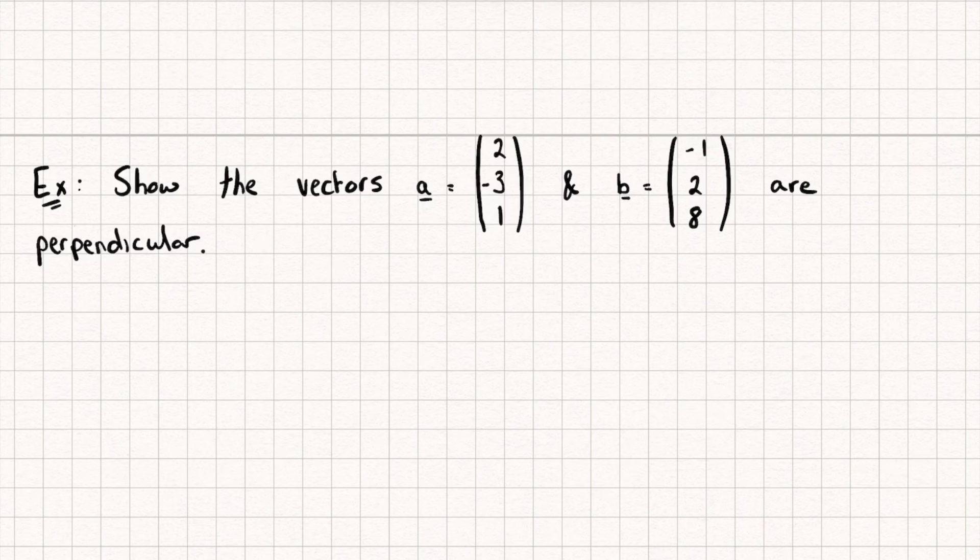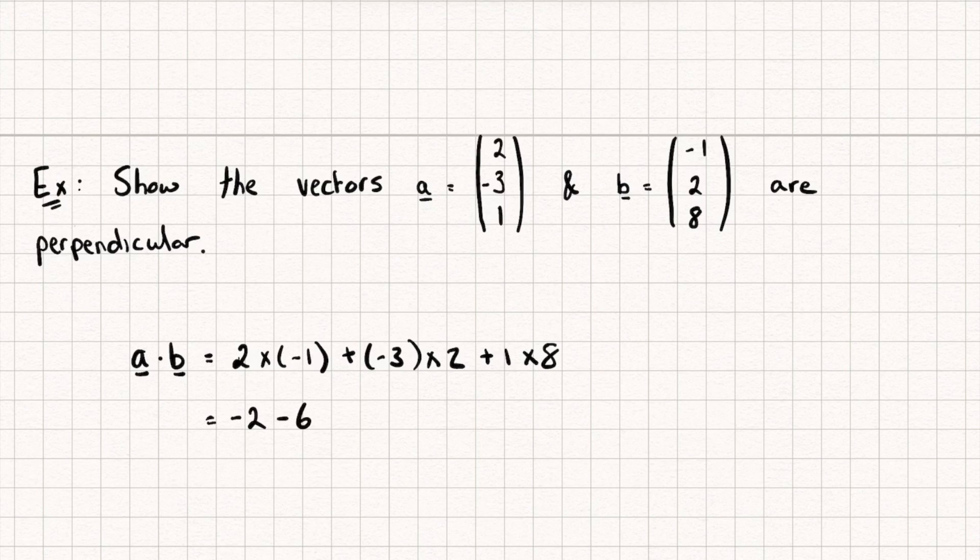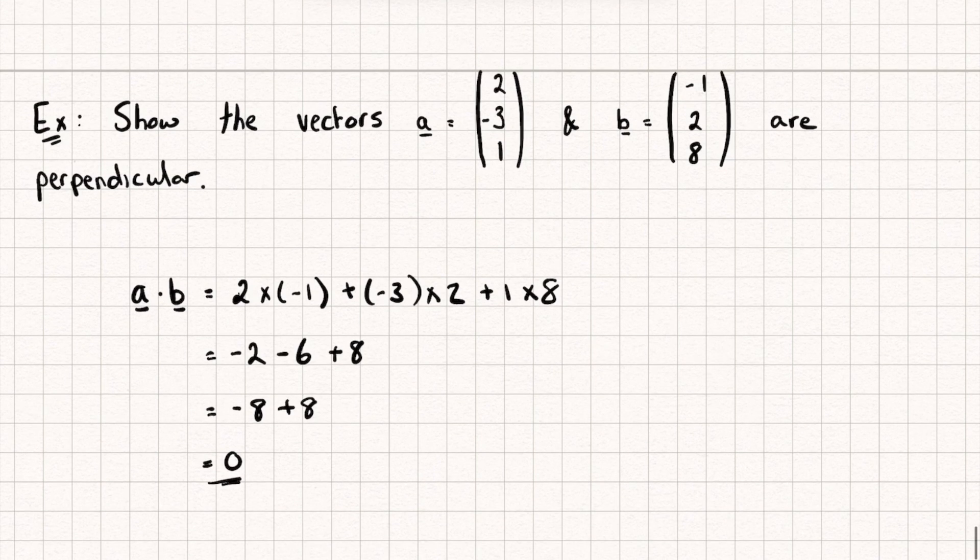So let's take a look at an example where we have to show that the vectors a and b are perpendicular. To do that I'm going to calculate the dot product or the scalar product. So we're going to do 2 multiplied by negative 1 plus negative 3 multiplied by 2 plus 1 multiplied by 8, and so we get negative 2 minus 6 plus 8, which gives us negative 8 plus 8, which is equal to zero. Therefore the two vectors are perpendicular to each other.